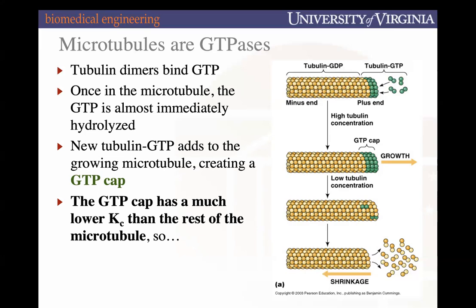What causes the shrinkage is that once enough of the GTPs have been hydrolyzed to GDP and there's less monomer available, the GTP cap will no longer be present. That causes the critical concentration to rise back up. If the monomer concentration is below the critical concentration, we get filament shrinkage. The GTP cap being gone and the reduced surrounding monomer concentration — those two things together cause tubulin filament shrinkage.